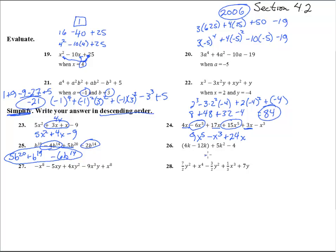Number 26. 4k minus 12k, that's negative 8k. Put the 5k squared first because it's got the biggest power, minus 4. That's what it told us to do. It's not necessarily crucial to writing down a polynomial, but it's a standard way that it gets written.